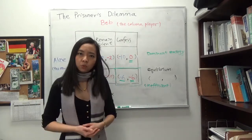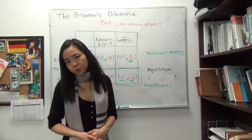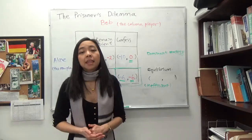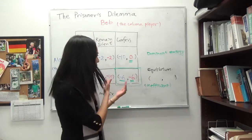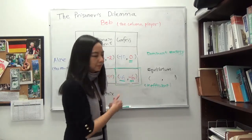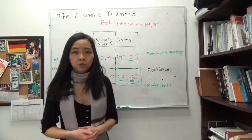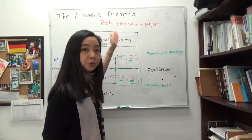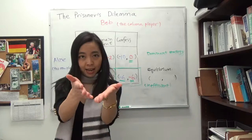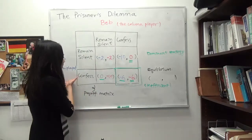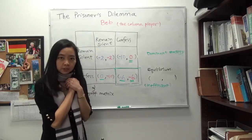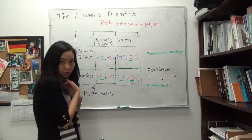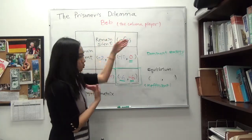So how do we solve the game? What would each of them choose? Notice that they just met, so there's no mutual trust between them, and they are in separate cells so they don't know what each other is doing. To solve the game, you have to put yourself in either of the prisoners' shoes. We start with Alice. Suppose you're Alice — you have no control over Bob's choice. So you can only assume: given Bob does this, what do I want to do?